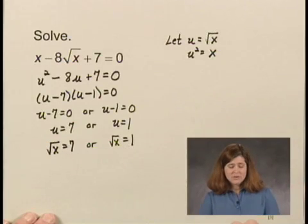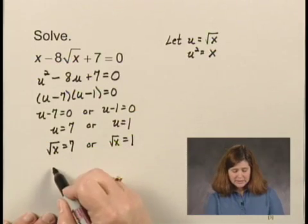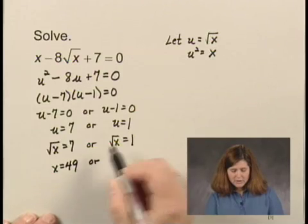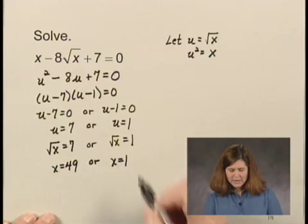And now we can solve for x. We square both sides here, and we have x equals 49, or square both sides here, we have x equals 1.